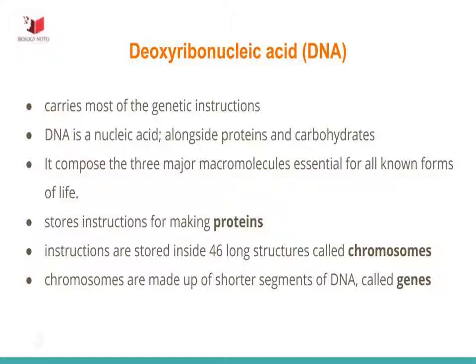DNA stores instructions for making other large molecules called proteins. These instructions are stored inside each of your cells, distributed among 46 long structures called chromosomes. These chromosomes are made up of thousands of shorter segments of DNA called genes. Each gene stores the directions for making protein fragments, whole proteins, or multiple specific proteins.